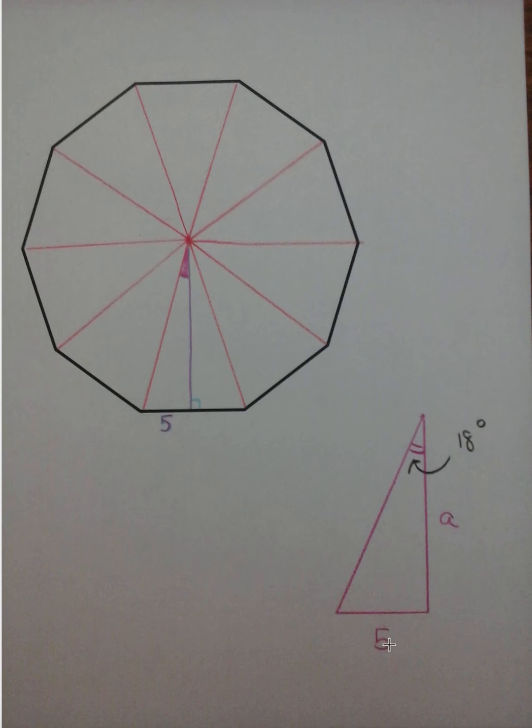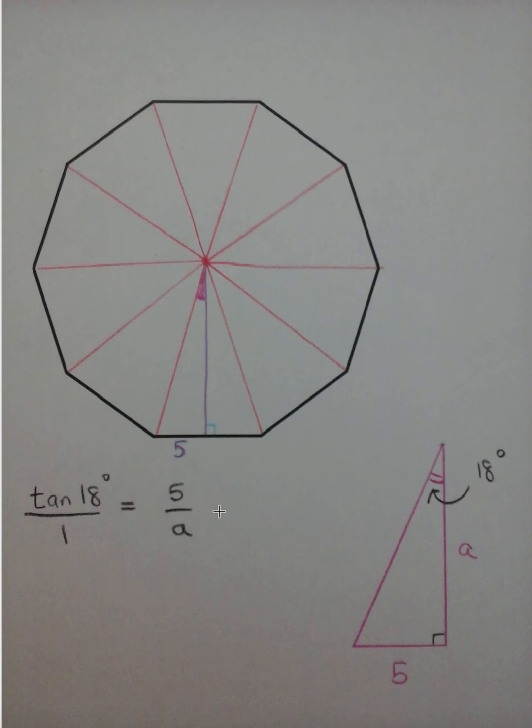Set up the sides: 5 and then a for apothem. Set up the equation for apothem. You're going to use tangent. 5 is opposite of 18, a is adjacent to 18.